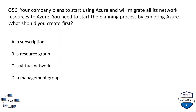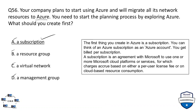Question 56: your company plans to start using Azure and will migrate all its network resources to Azure. You need to start the planning process by exploring Azure. What should you create first? Options: A) a subscription, B) a resource group, C) a virtual network, or D) a management network. The correct option is A — a subscription. You can think of an Azure subscription as an Azure account; you get billed per subscription.